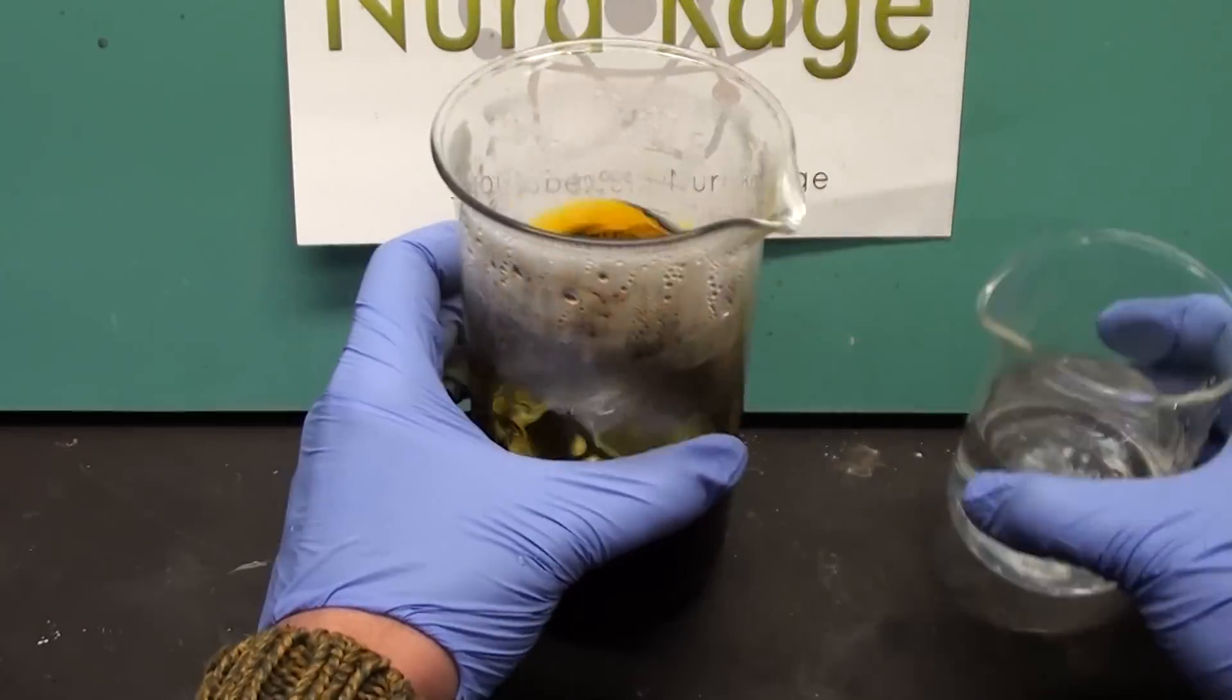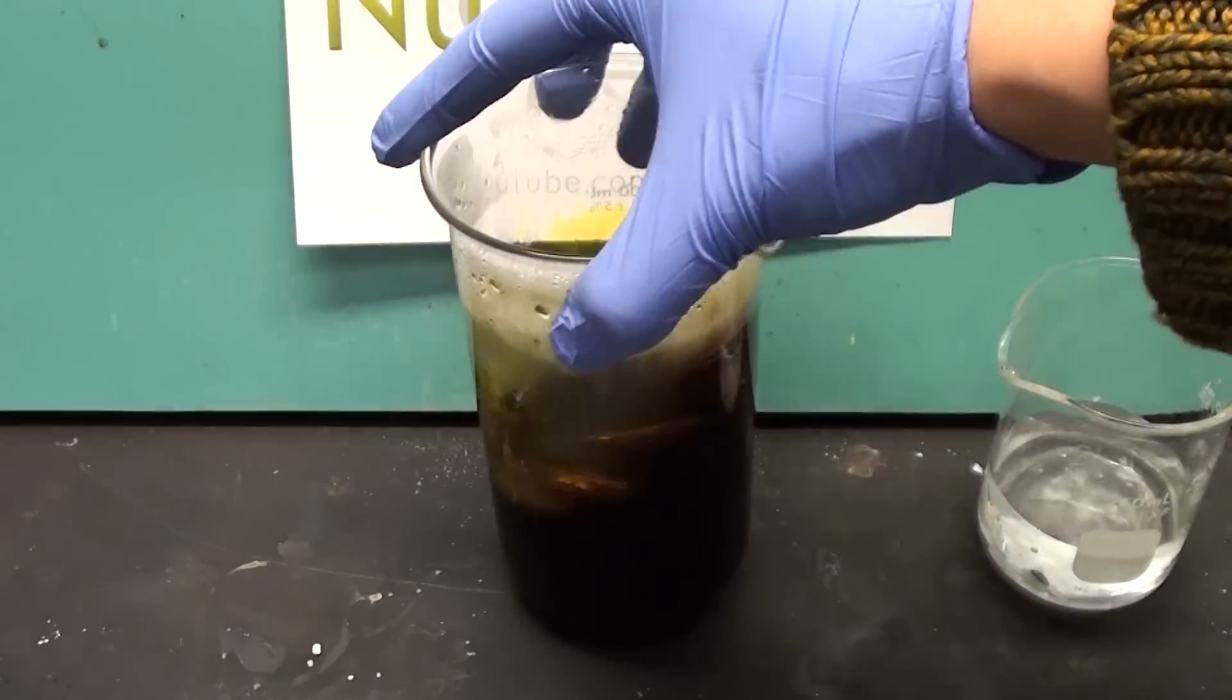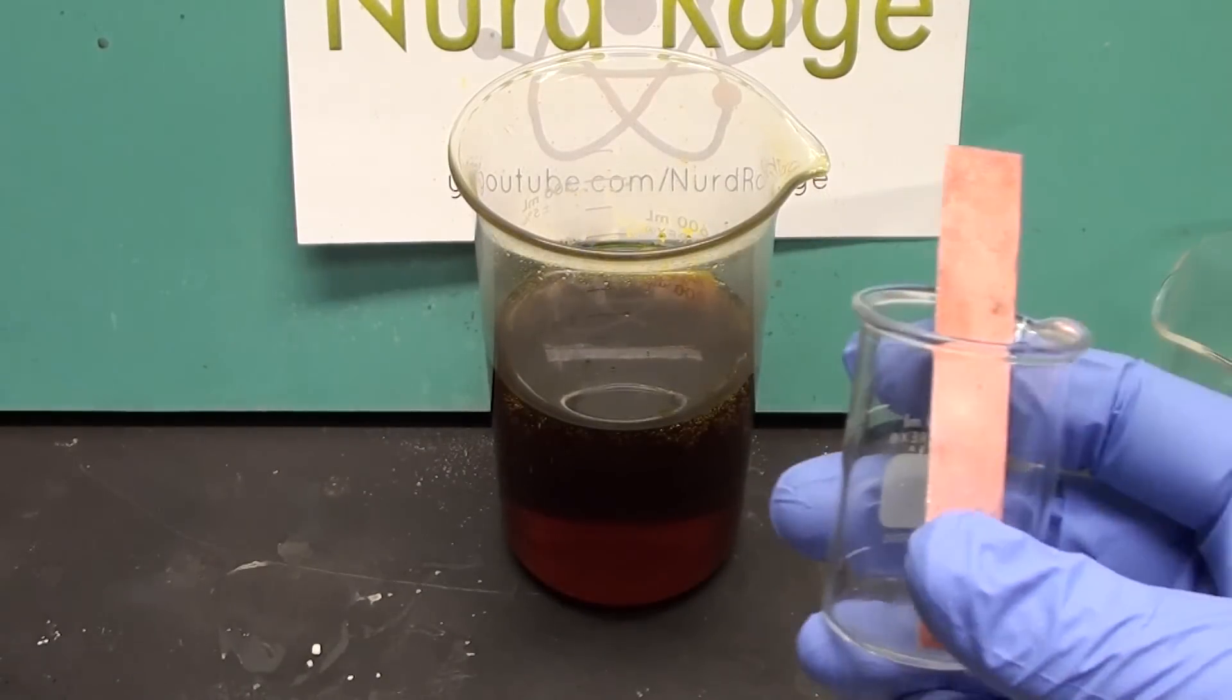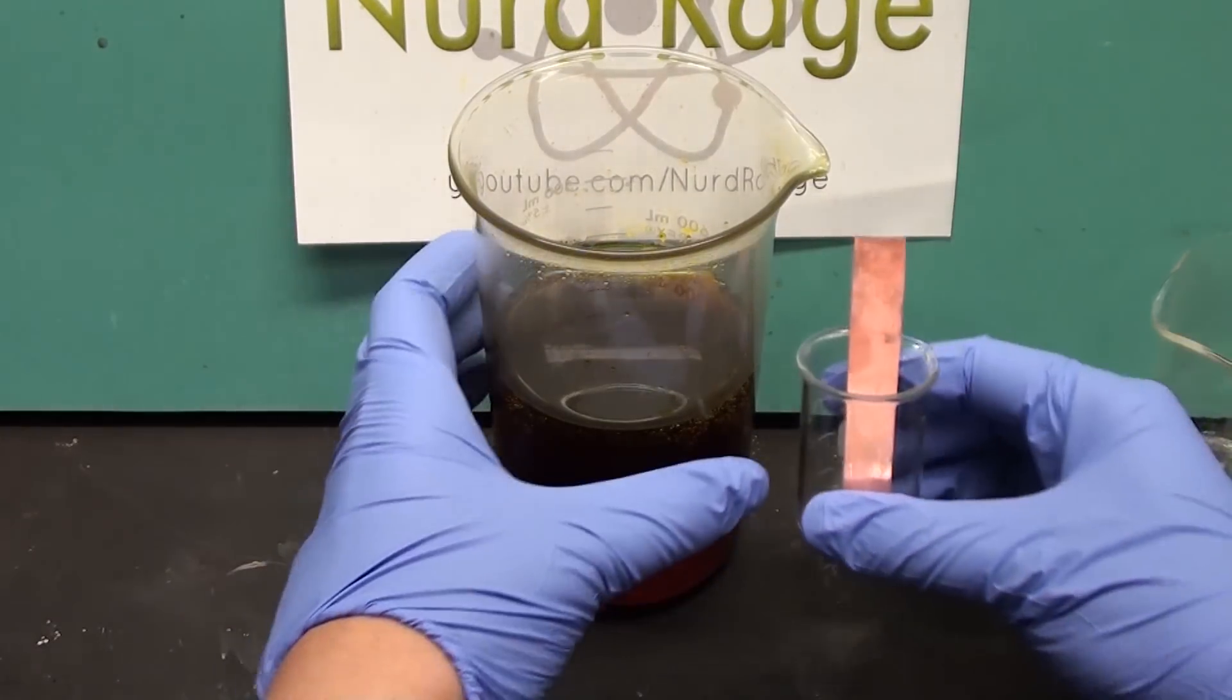Of course the hydrogen peroxide method is faster if you're impatient. Anyway, however you oxidize it, it's now ready for etching printed circuit boards.